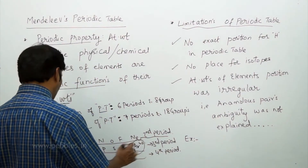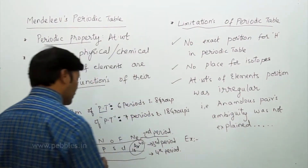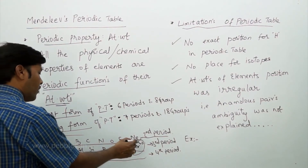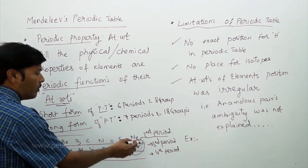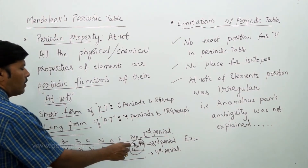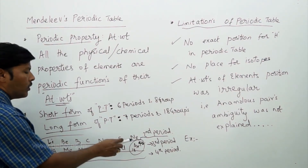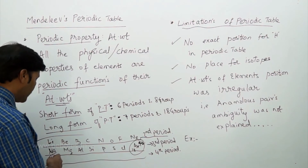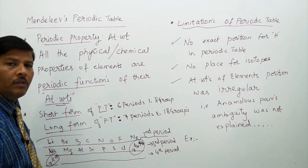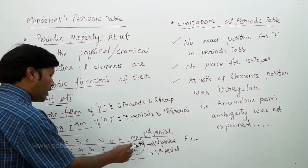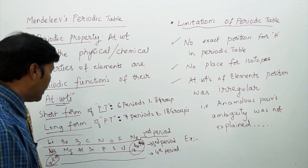What is interesting here is that argon has atomic number 18 and atomic weight 40, while potassium has atomic number 19 and atomic weight 39. Because the atomic weight of argon is 40, it is supposed to be placed in the position of potassium. The potassium should occupy the argon position and argon should occupy the potassium position. But in the periodic table, the places have been exchanged.